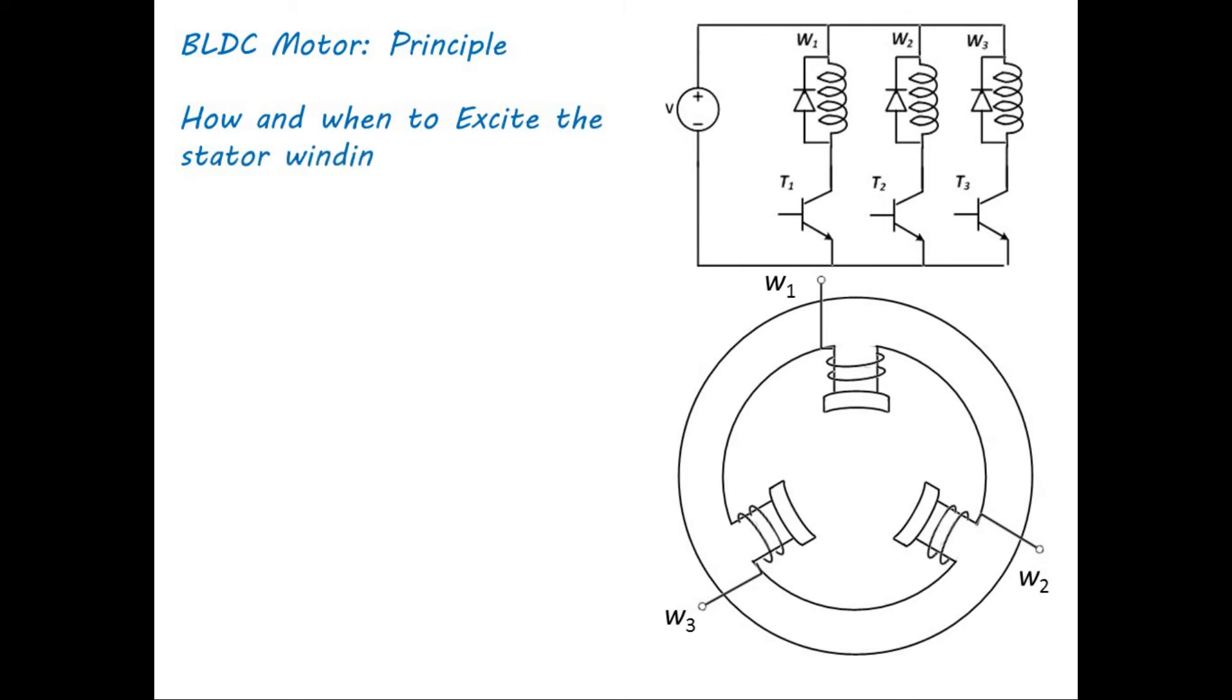Here, to rotate BLDC motor, two important aspects need to be understood. First, how and when to excite the winding. To excite the stator winding, DC source and electronic switches such as transistors are used as shown in figure. Anti-parallel diode is connected to freewheel the stored energy of inductor.